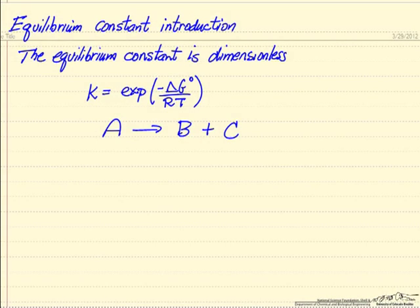I'm going to present a brief introduction to the equilibrium constant. Remember the equilibrium constant is dimensionless and this is important. K is dimensionless and of course this term in the exponential is dimensionless where delta G is the change in the Gibbs free energy at standard state conditions. So let's look at a simple A goes to B plus C reaction.